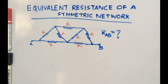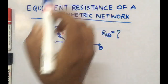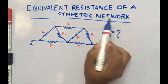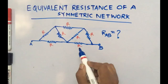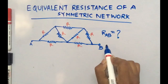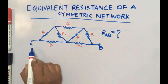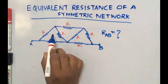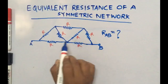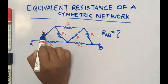Hello friends, welcome to Electrical Point. In this video I am going to show you how to find the equivalent resistance of a symmetric network. You can see this circuit and we have to calculate the resistance across points A and B. There is a difficult pattern given here and each resistance has a value of R.